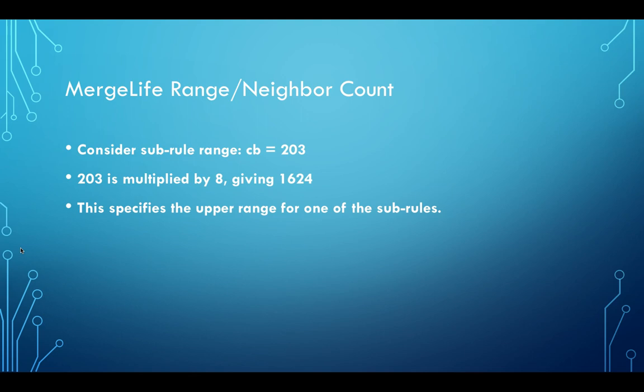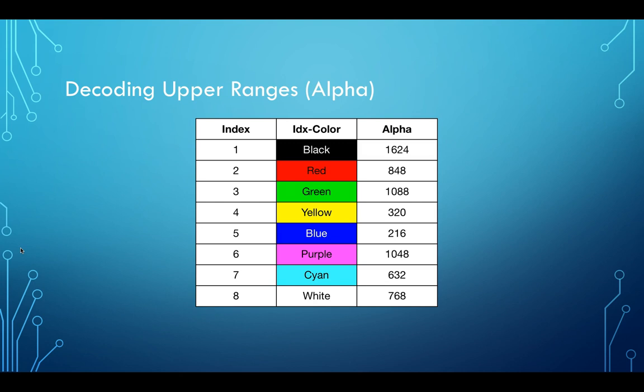So that's just defined by the rule that I created for MergeLife. It's multiplied by 8. And this specifies the upper range of one of those sub-rules. So the upper range, 1624, is for the sub-rule. The lower part of the range gets defined by the previous sub-rule. So I decoded the first one into 1624. That's the alpha column that you see there. Then I decode the next one, 848. And that's the next set of four hexadecimal digits. So we just work our way from the left to the right of the MergeLife update rule. And we get all of these numbers. These are all of the alphas. Those are the high limit of the range for which each of these rules apply.